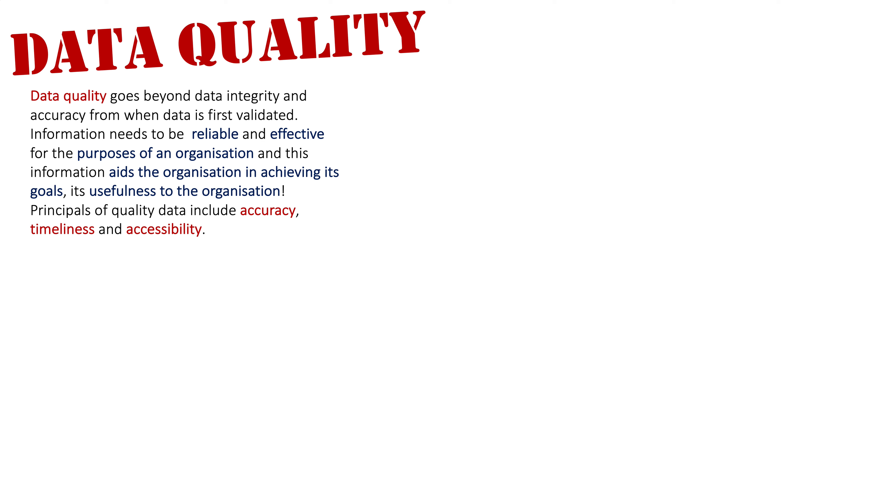As mentioned in the title of this video, there are three areas of data quality that we're going to look at here: accuracy, timeliness, and accessibility. So firstly, let's look at accuracy.